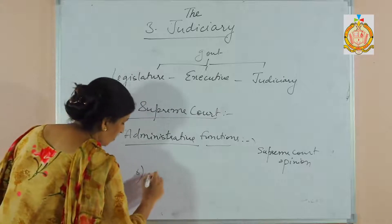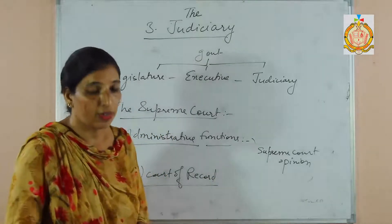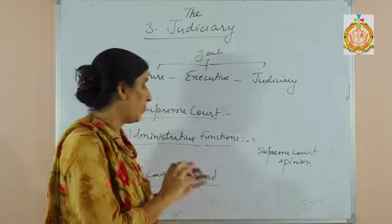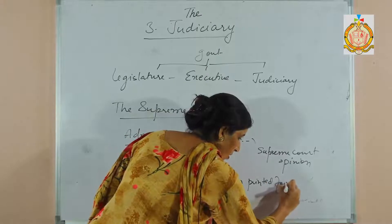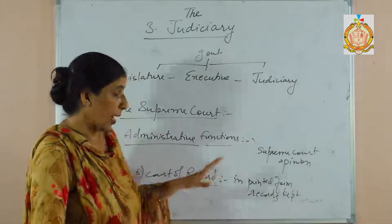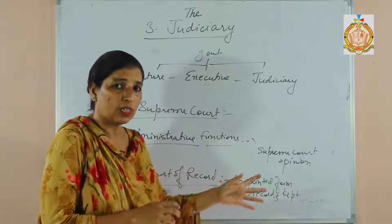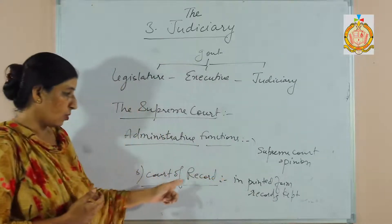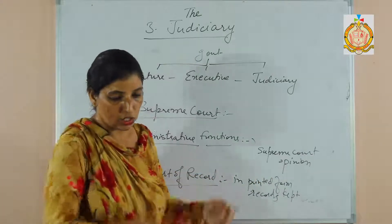Next is Court of Record. The Supreme Court is also known as the Court of Record. This means all the cases that come to the Supreme Court — all hearings, all case reports — are kept on record in printed form. These records are kept for future reference, so they can be used as reference in future cases and for lawyers in their pleading. That is the main purpose of the Court of Record: keeping all case decisions in printed form.